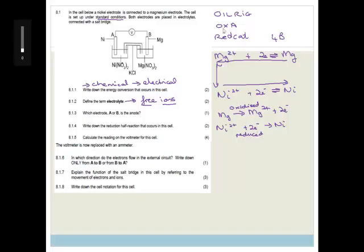Do you agree that magnesium is losing electrons, so therefore it has been oxidized, and nickel is gaining those 2 electrons, so it has been reduced? Therefore, we consider oxidation occurs at the anode, and the anode is the magnesium, so therefore the magnesium, or B, is the anode.